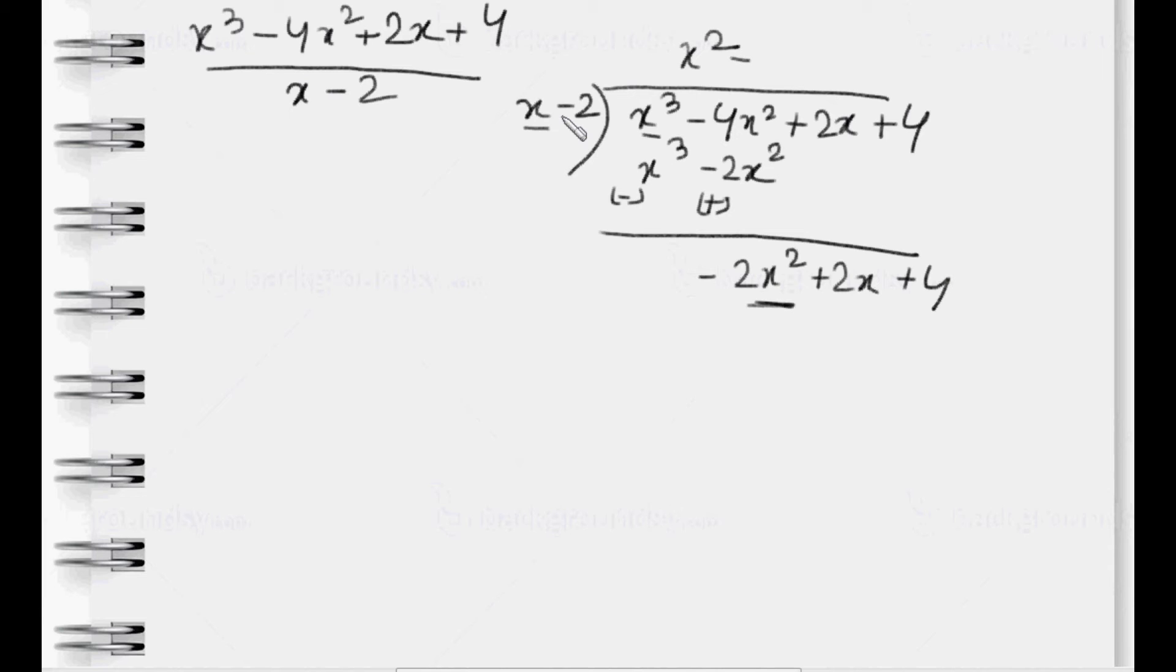Now we have to convert x to -2x². For that, we have to multiply -2x with it. -2x into x is equal to -2x². -2 into -2x is equal to +4x. Now we subtract again. During subtraction, sign changes. -2x² minus -2x² is equal to 0. And 2x - 4x is equal to -2x.